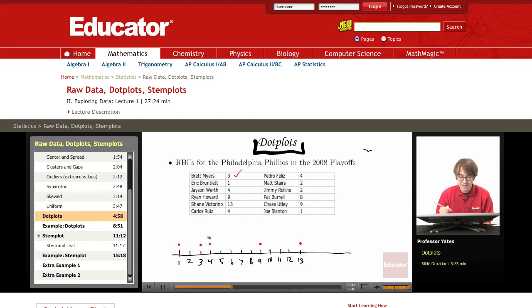Matt Stairs had two. Jimmy Rollins, that's the second one there. We have Pat Burrell at eight. Chase Utley at nine. And Joe Blanton at one. So that's our distribution here.